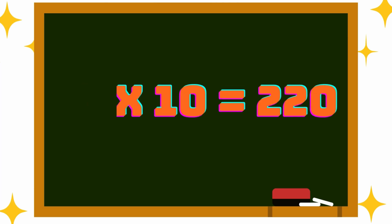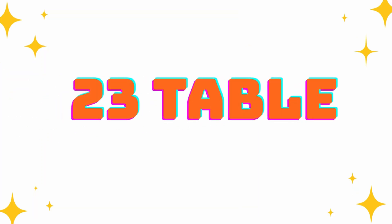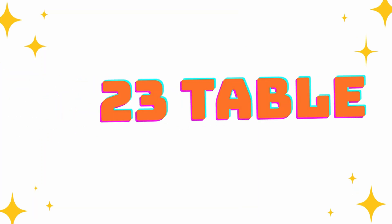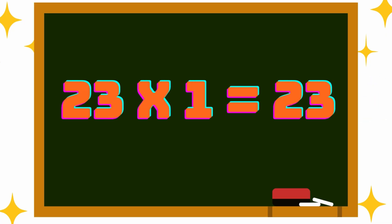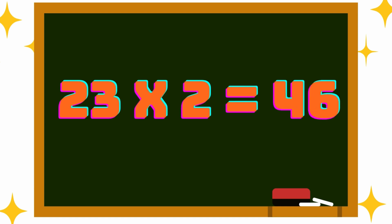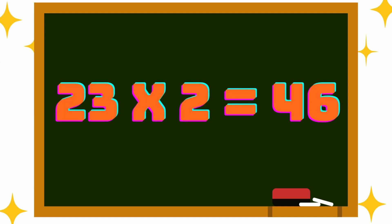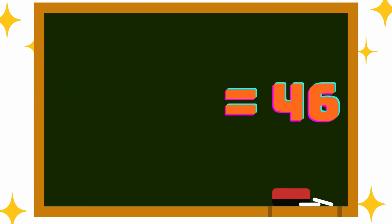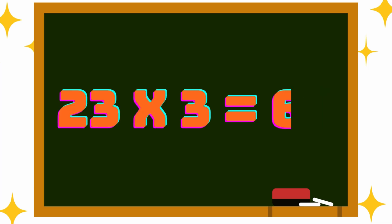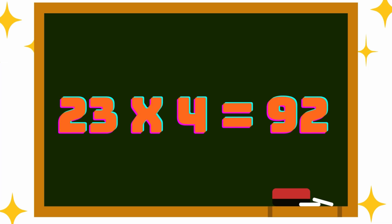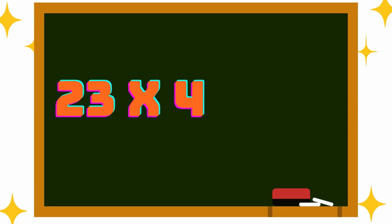Next one, 23rd table. 23 into 1 is 23, 23 into 2 is 46, 23 into 3 is 69, 23 into 4 is 92.